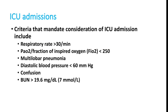Criteria for ICU admission include: respiratory rate more than 30, PaO2/FiO2 ratio less than 250, multilobar pneumonia, diastolic blood pressure less than 60 mmHg, confusion, and BUN more than 19.6 mg/dL. If any of these factors are positive, the patient must be admitted to the ICU.